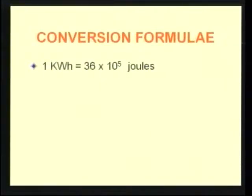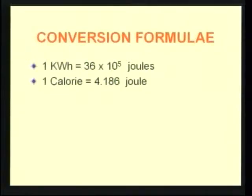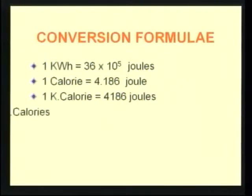Some useful conversion formulas for solving problems: one kilowatt hour equals 36 times 10 to the power of 5 joules. One calorie equals 4.186 joules. Normally thermal energy is measured in kilocalories; one kilowatt hour equals 860 kilocalories. This formula is useful for converting electrical energy into thermal energy. These formulas are useful for conversion of energies in various problems.